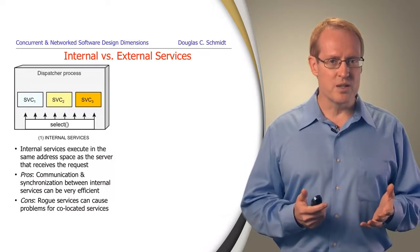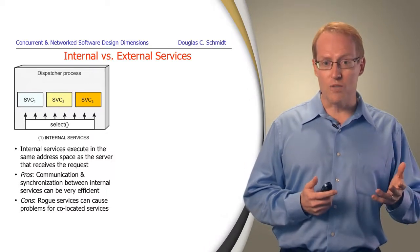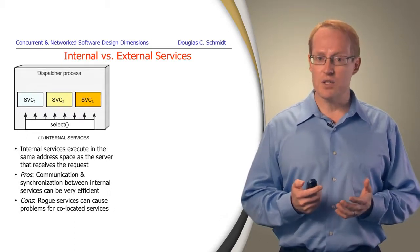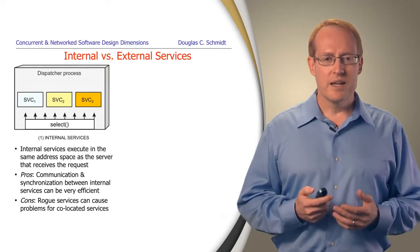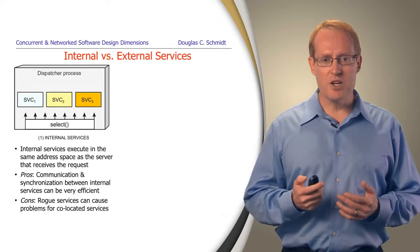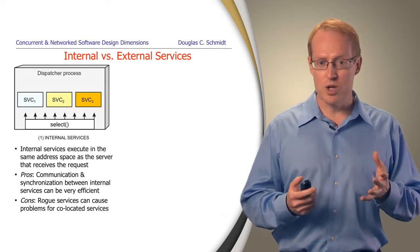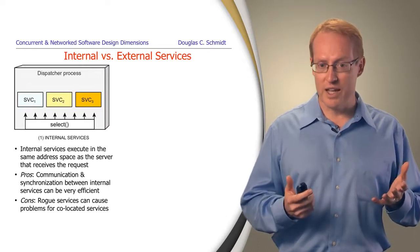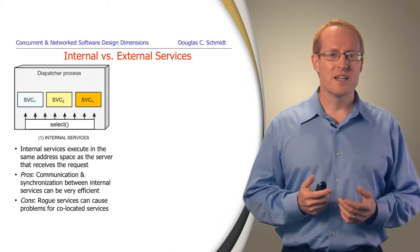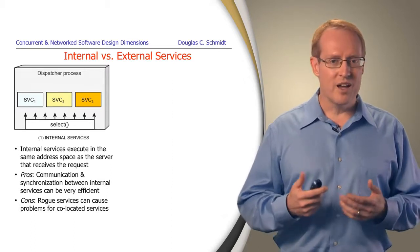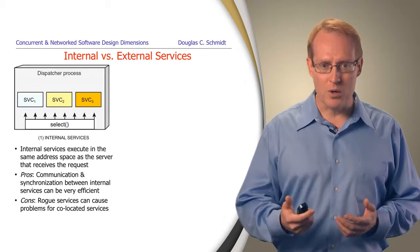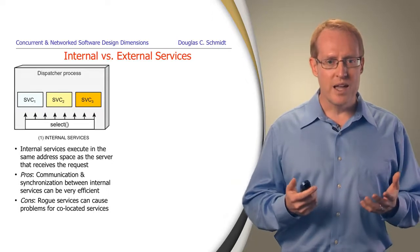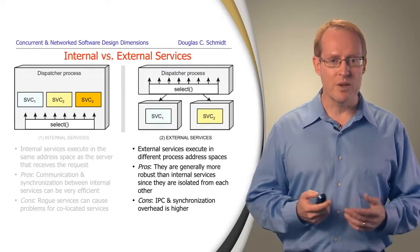Another set of design dimensions relate to internal versus external services. An internal service executes in the same address space as the server that receives the request from the client. The benefit is that communication and synchronization can be very efficient and low latency. The downside is that if services go rogue — with an infinite loop or memory corruption — this can cause problems for other co-located services by corrupting their state or interfering with their processing or timing properties.